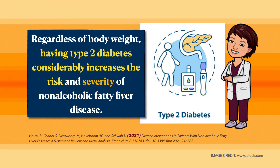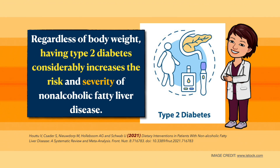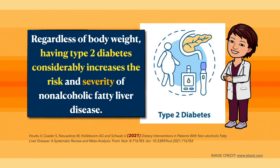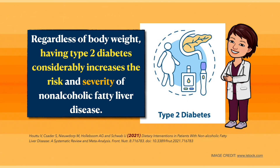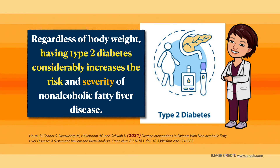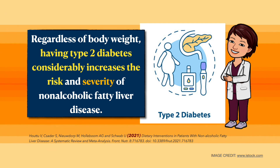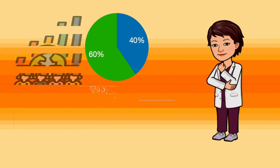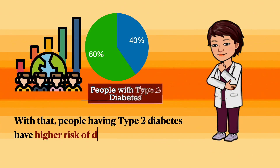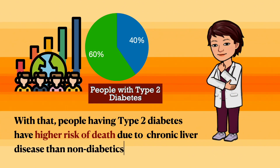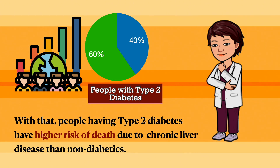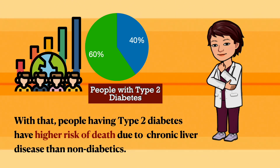Additionally, regardless of body weight, having type 2 diabetes considerably increases the risk and severity of non-alcoholic fatty liver disease. With that, people having type 2 diabetes are more likely to die due to chronic liver disease than non-diabetics.